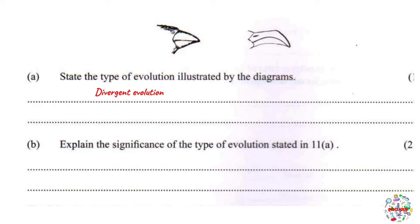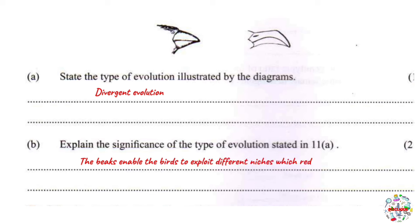Part B: explain the significance of divergent evolution in this case. The beaks enable the birds to exploit different niches. This reduces competition for food.